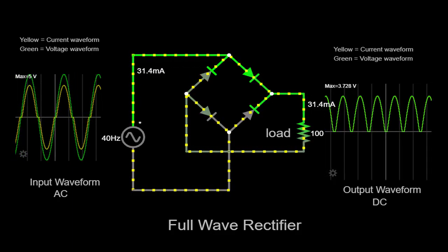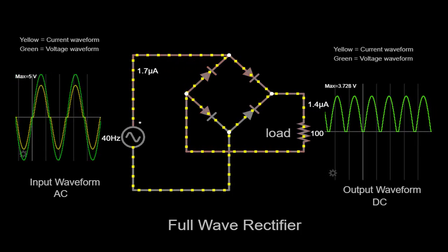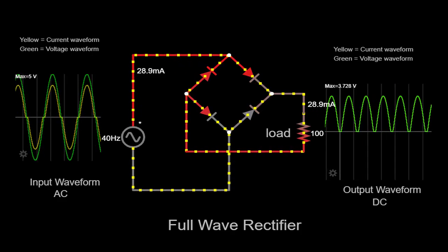While the output waveform of the full-wave rectifier is a pulsating DC signal, it may still contain some ripple or variations.